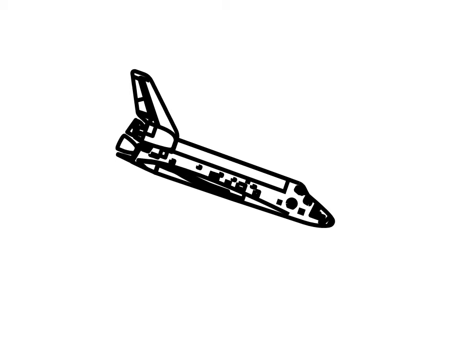We begin the free body diagram by drawing a picture of the object being analyzed. In this case, the space shuttle in a glide.